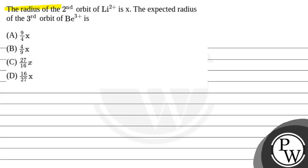Hello, let's read this question. The radius of the second orbit of lithium-2+ is x. The expected radius of the third orbit of beryllium-3+ ion is, and these are the following options given to us. So first we will take the key concept of this question.